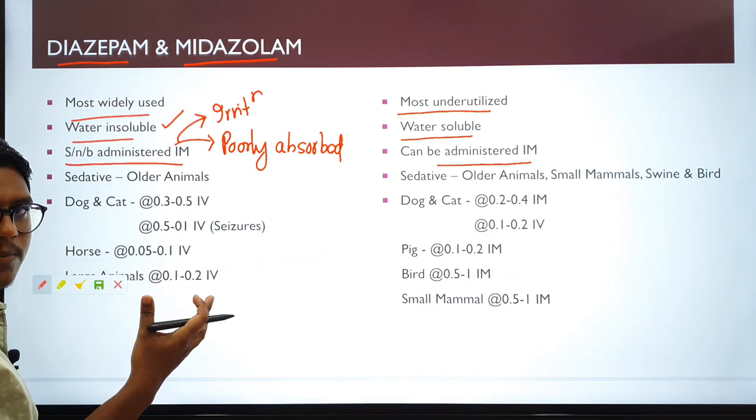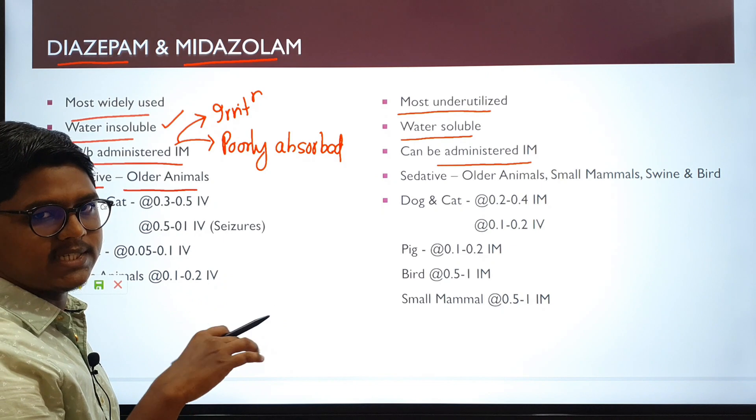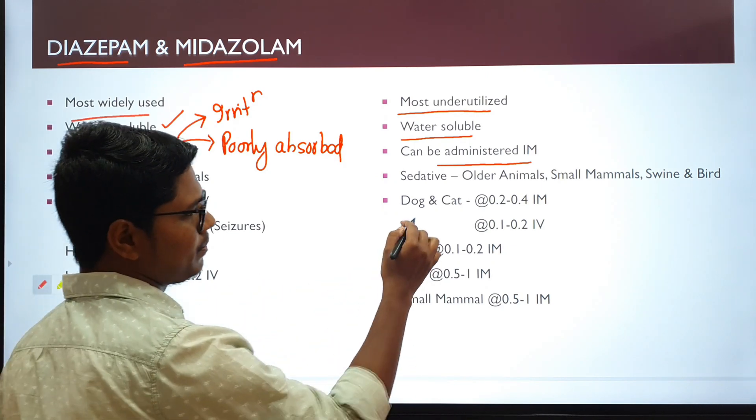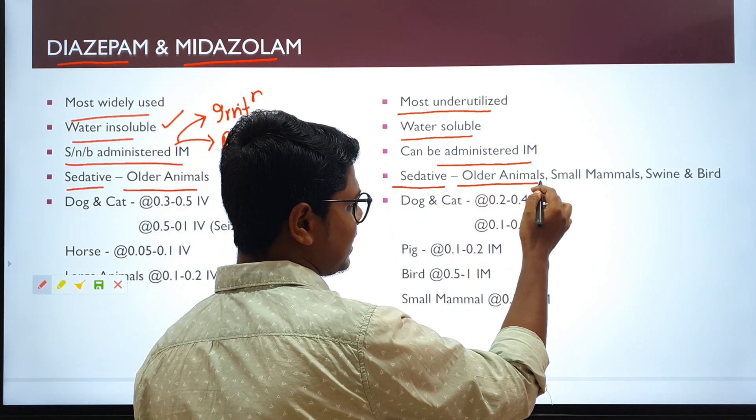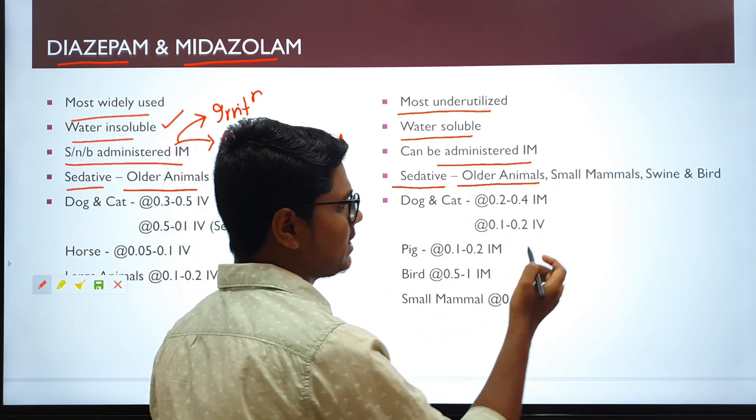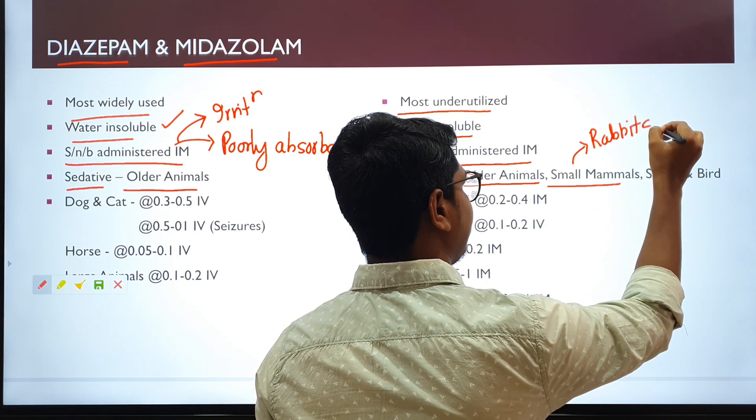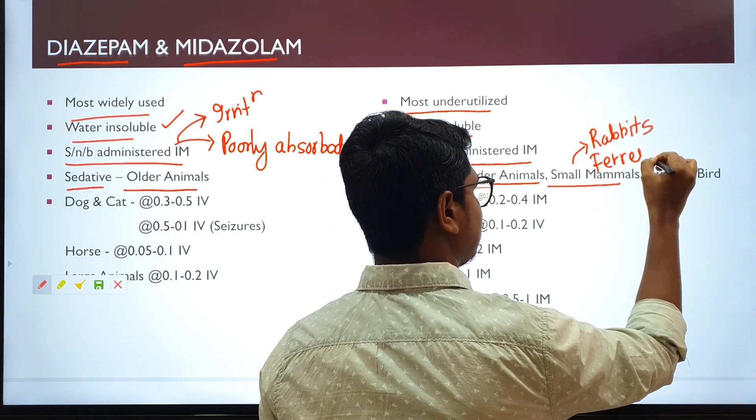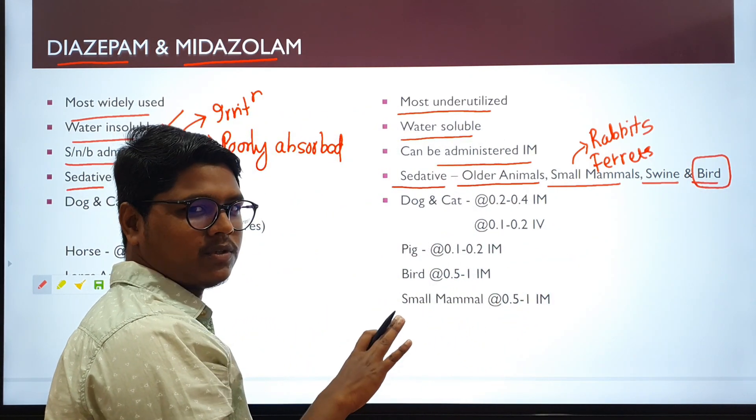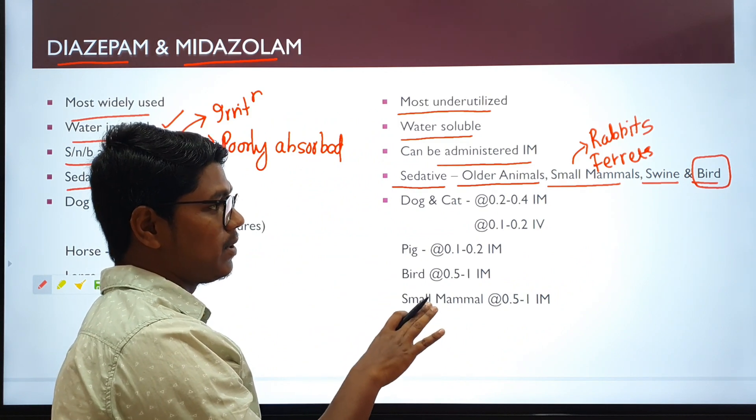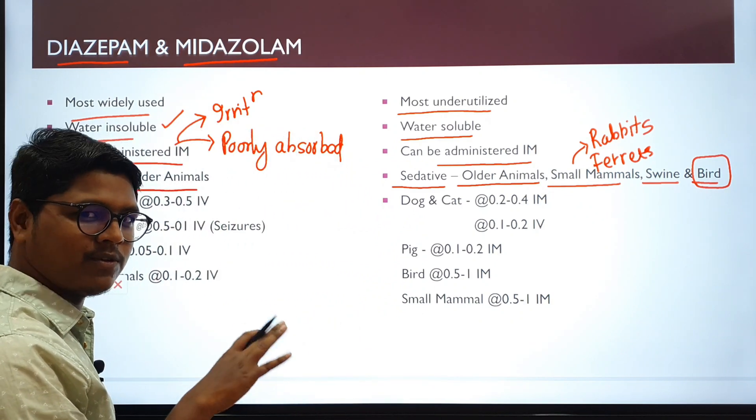I told you about the sedative effect. The sedative effect of diazepam is basically restricted to older animals or geriatric patients, dog and cat or whatever. But midazolam, being more potent than diazepam, acts as a sedative for older animals, geriatric patients, as well as small mammals like rabbits, ferrets, as well as swine and birds. I already have a video regarding bird anesthesia where I told about the use of midazolam intranasally for sedation in birds. I will give the link in the description.